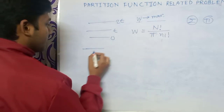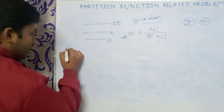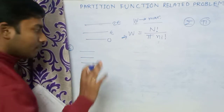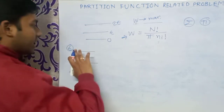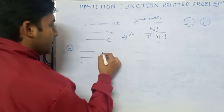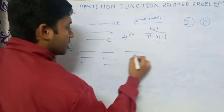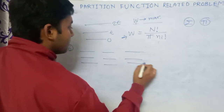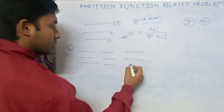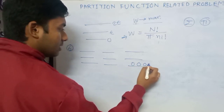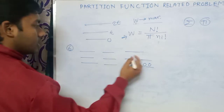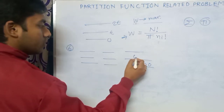Let us understand with a simple example. Suppose we have six particles and three energy states. There can be many arrangements. I am considering three arrangements: arrangement one has four particles in one state and two particles in another state.